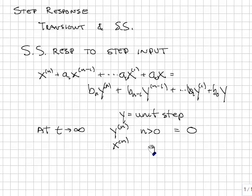Therefore, x_n, that is the derivatives of n for any n greater than zero, will also be zero. Therefore, we can look at the differential equation, and we're left with a0*x is equal to b0*y. y is the step final value will be 1 as time goes to infinity, and so the output will be b0 over a0.